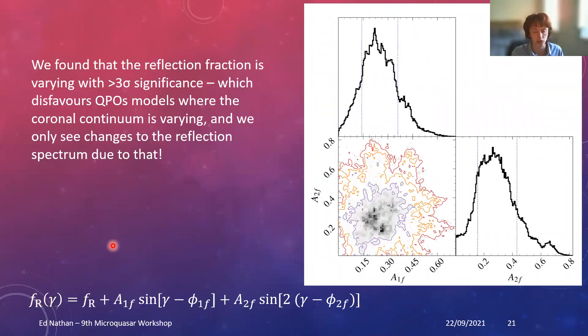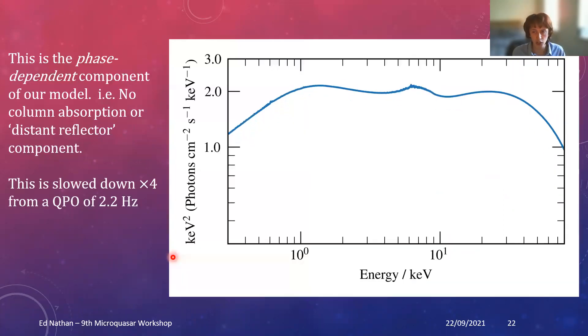To that significance, we can say that actually we do prefer a phase dependent asymmetric model, which is interesting. But particularly interesting is if we consider the reflection spectrum, which has got this two harmonic modulation. Here we find that these amplitude parameters are non-zero to at least three sigma because it's outside the three sigma credible interval. This really suggests and really disfavors models of the QPO where the reflection spectrum is merely changing because it's just coupled with the coronal flux. Instead, actually, the reflection spectrum is varying slightly differently. I've used this as an example earlier, but this is actually our phase dependent component of our model, slowed down by a factor of four. This is ignoring the distant reflector and ignoring the absorption column, but you can see what's going on.